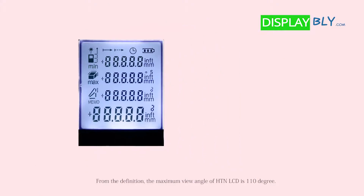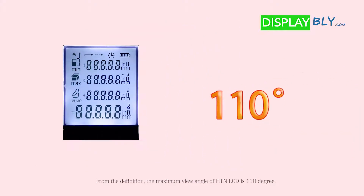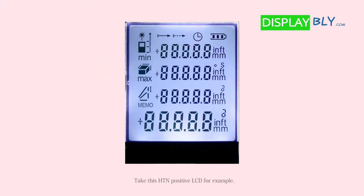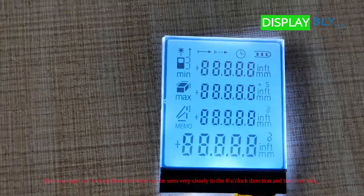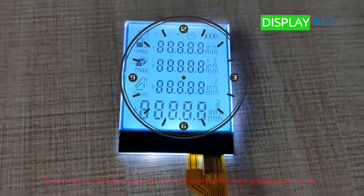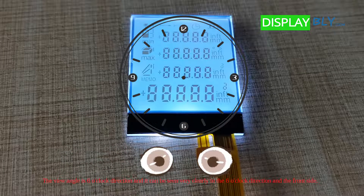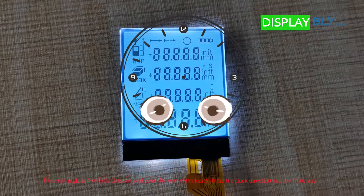From the definition, the maximum view angle of HTN LCD is 110 degrees. Take this HTN positive LCD for example. The view angle is the 6 o'clock direction, and it can be seen very clearly in the 6 o'clock direction and the front side.